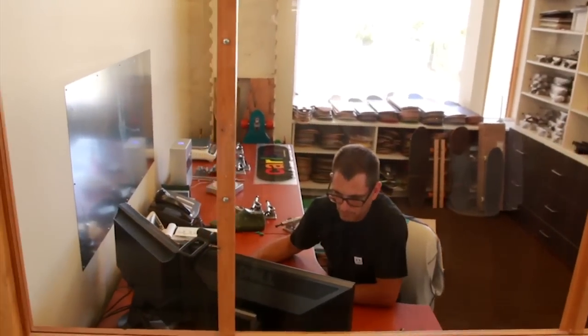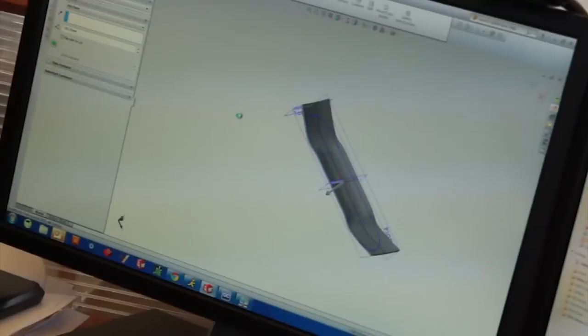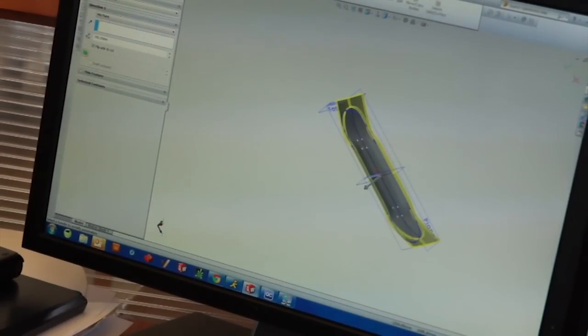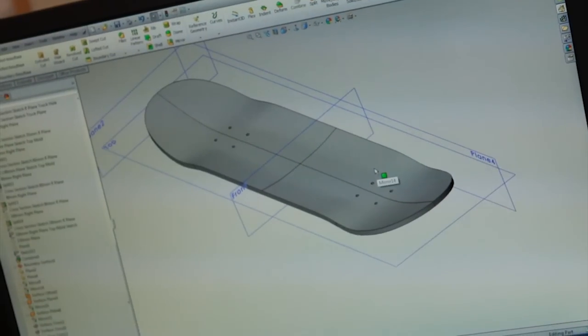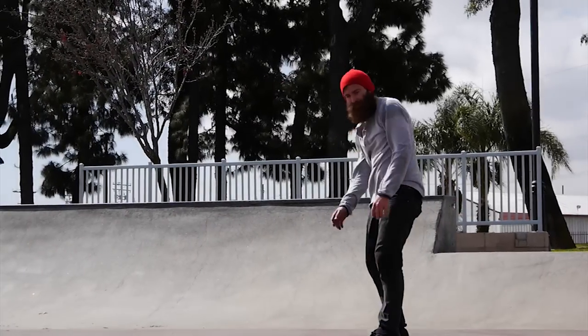Here, the hard good developer uses 3D software to go over every inch and angle of each product before their molds and templates are produced. In this stage, he will make various adjustments, including those based on the feedback he receives from the pros.